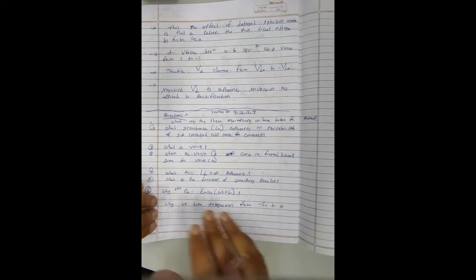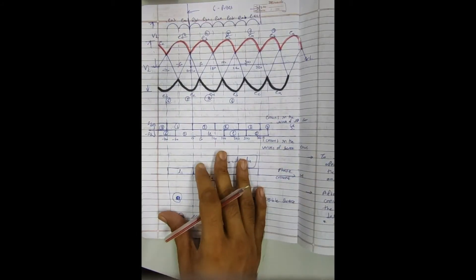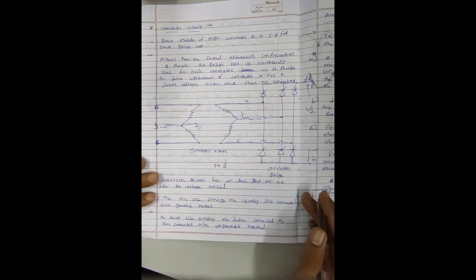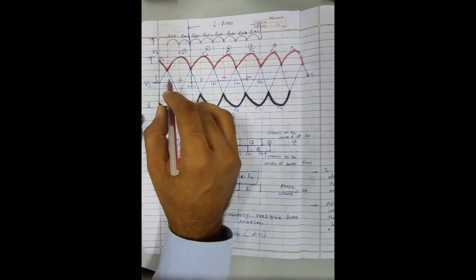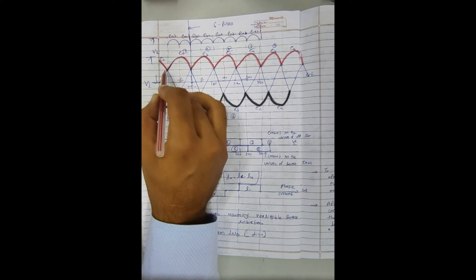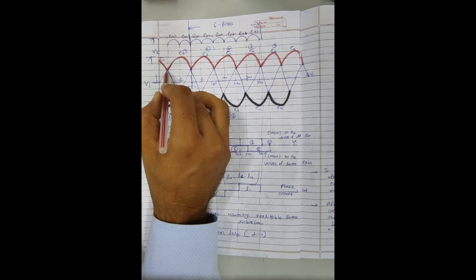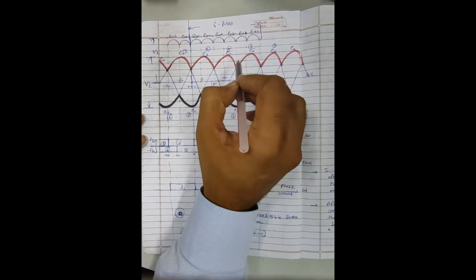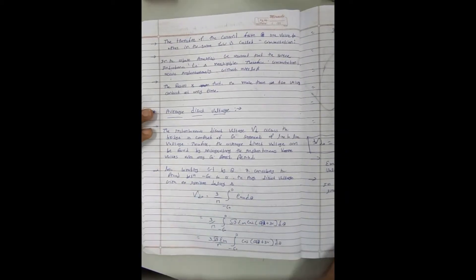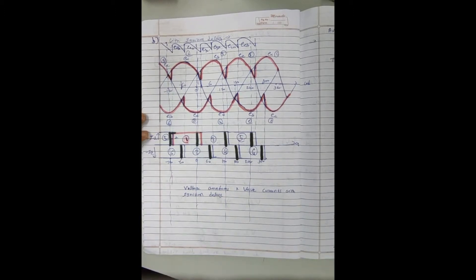Good morning students. In the last lecture, we understood the operation of a three-phase controlled rectifier with the assumption that source inductance is negligible and the firing angle for the thyristor is zero. Based on that, we first drew the waveform for alpha equals zero without any ignition angle delay. Then we analyzed the operation with a firing angle delay, while the assumption of negligible source inductance remained the same.